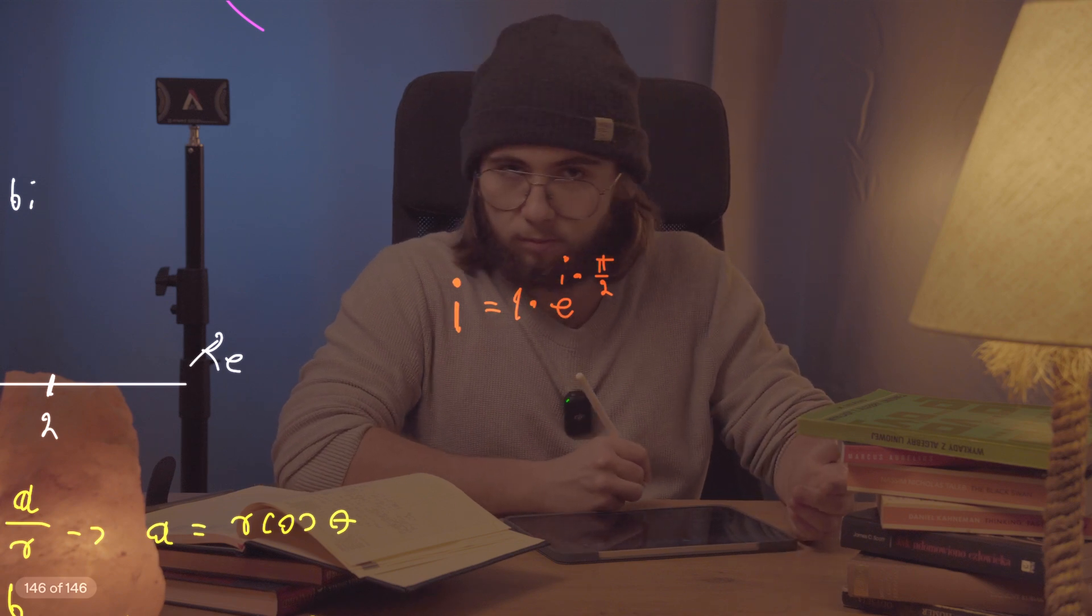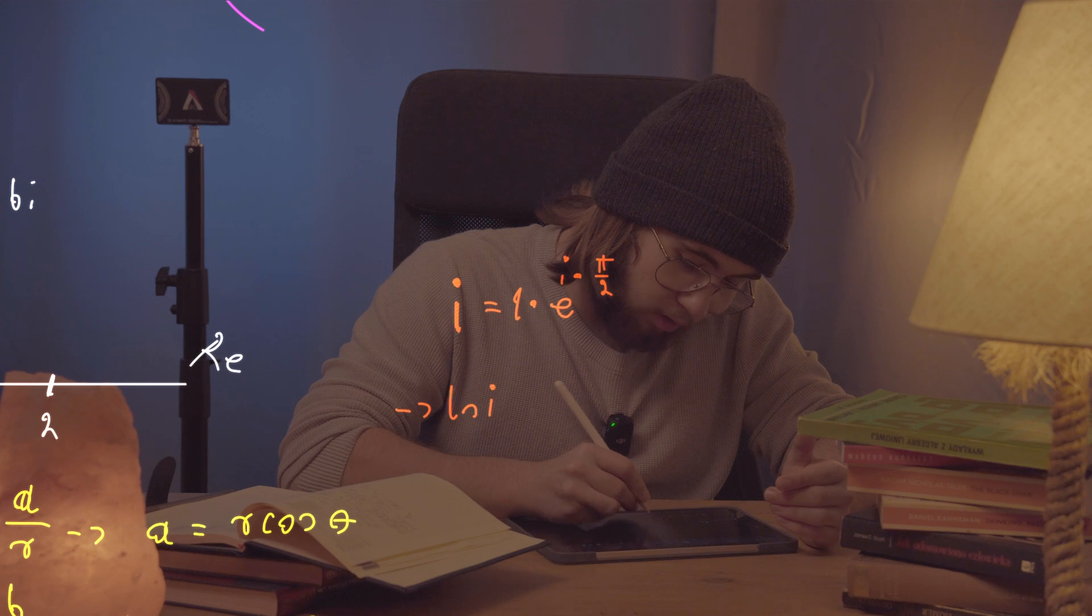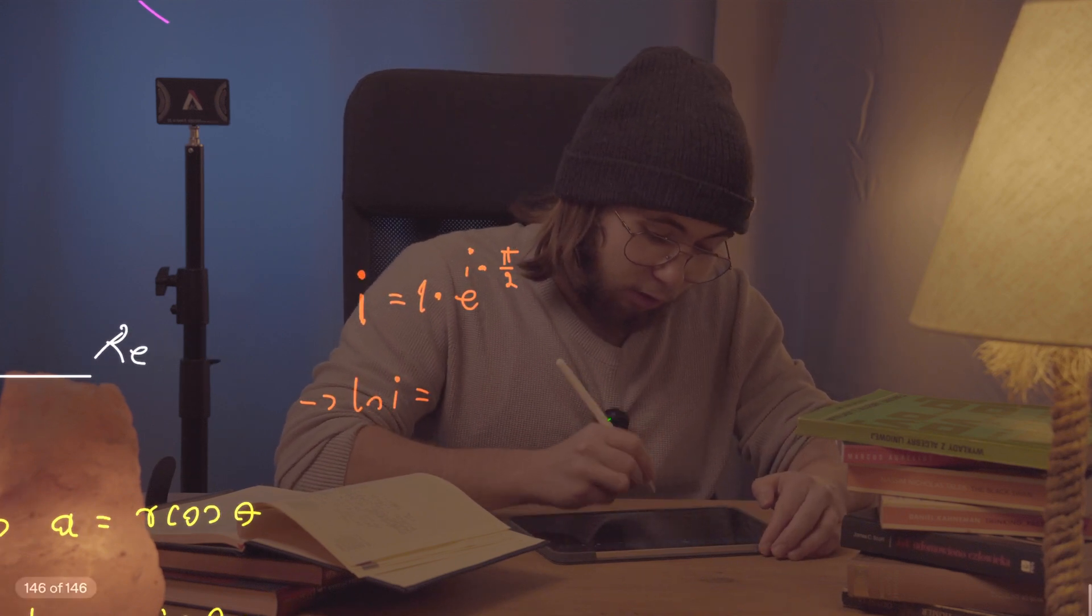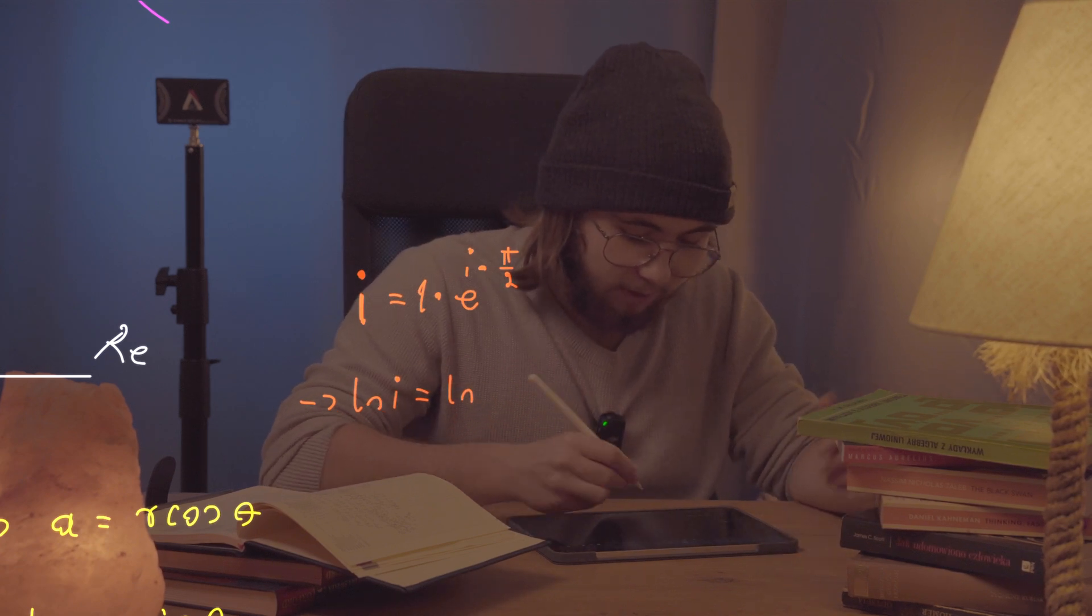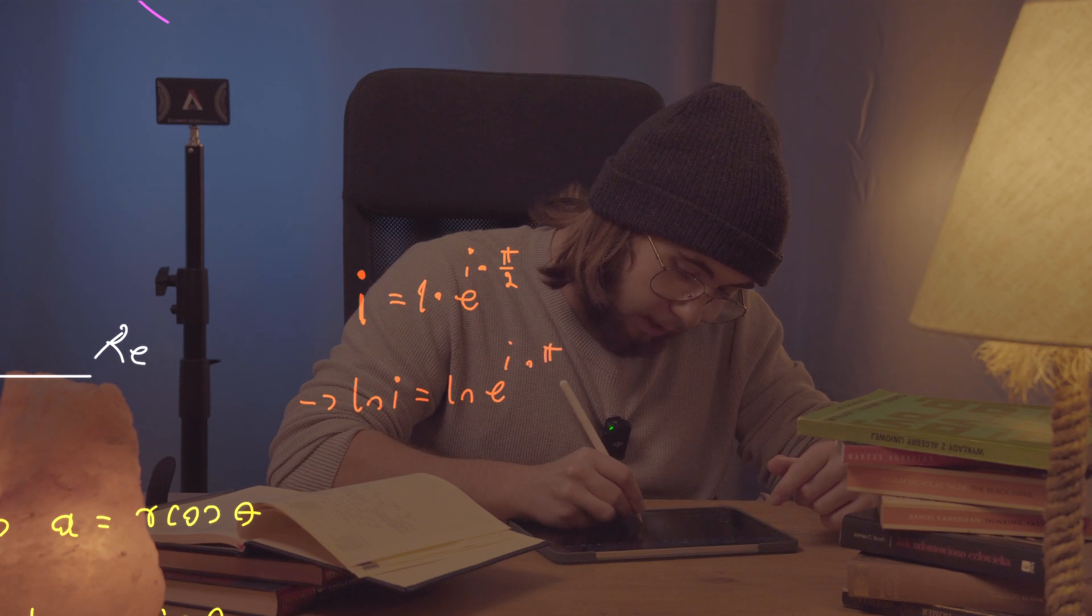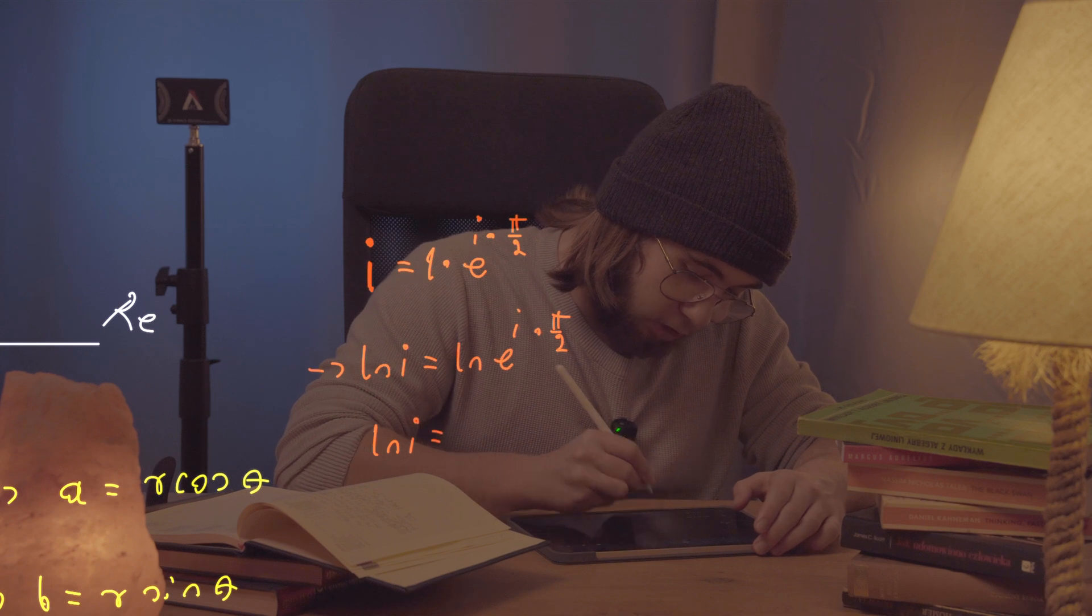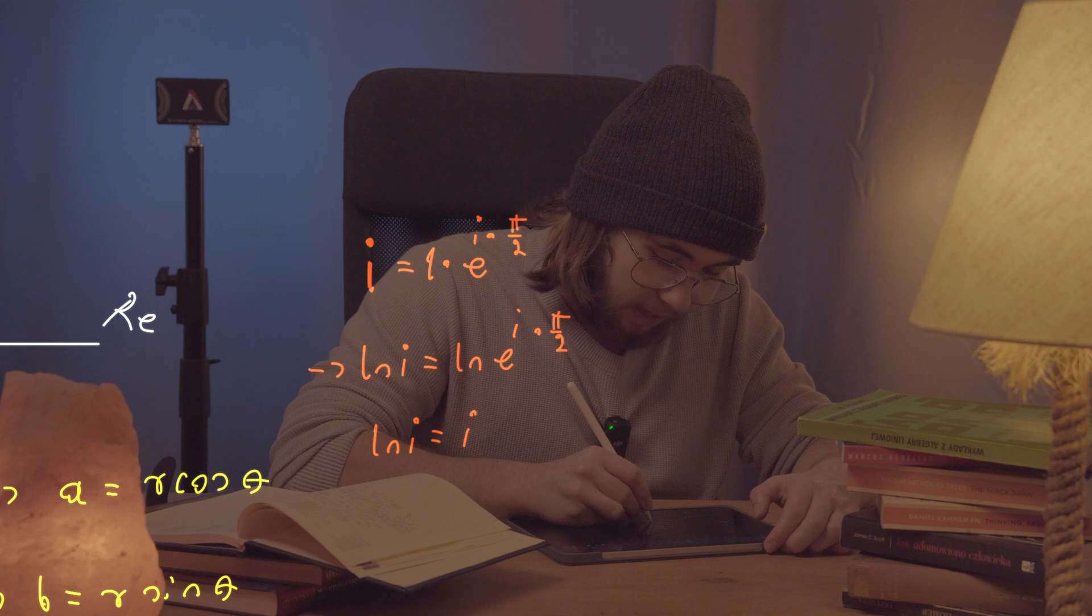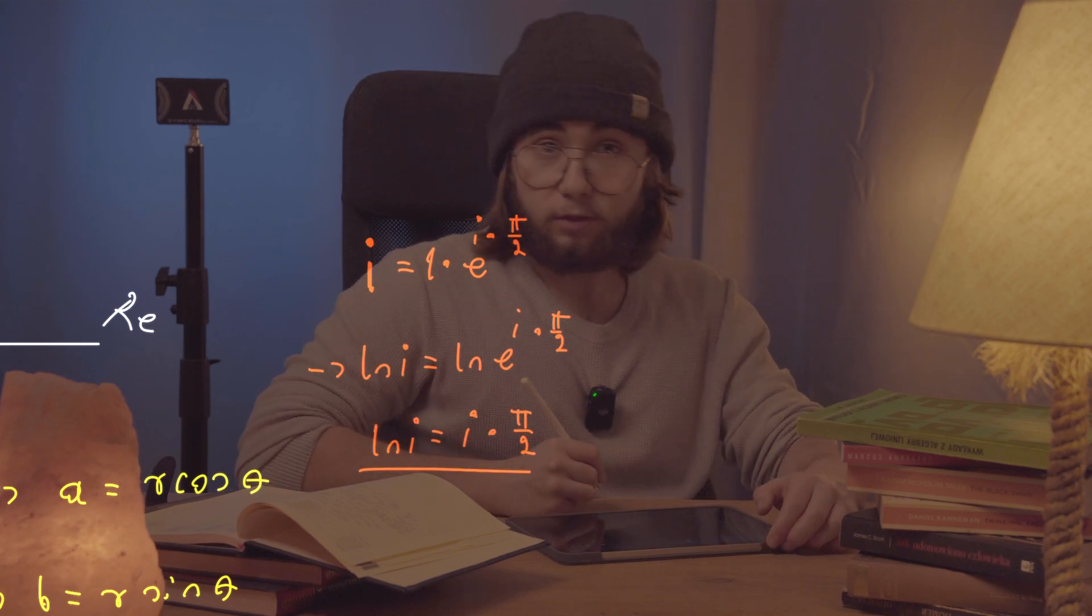And now we're taking the logarithm on both sides, because we were here after the logarithm in the first place. That's going to give us the natural log of, well, 1 times anything is just anything, natural log of e to the i multiplied by pi over 2, and so the natural log of i will just be equal to this natural log and this e are going to cancel each other out, i multiplied by pi all over 2.